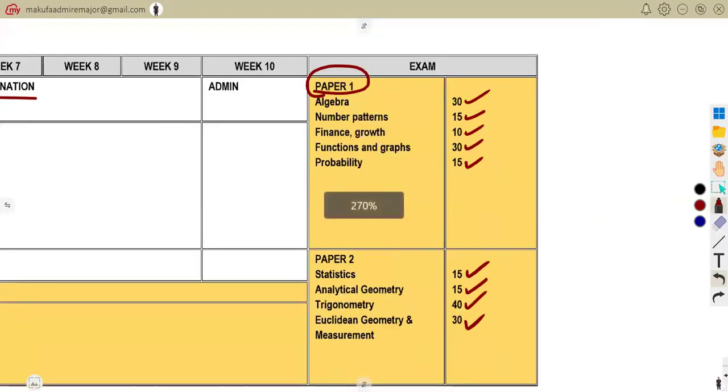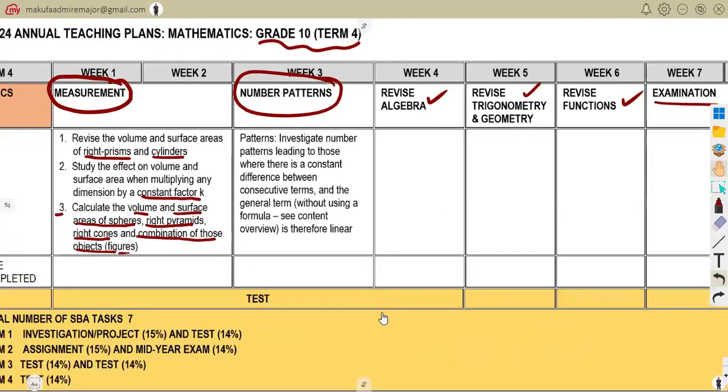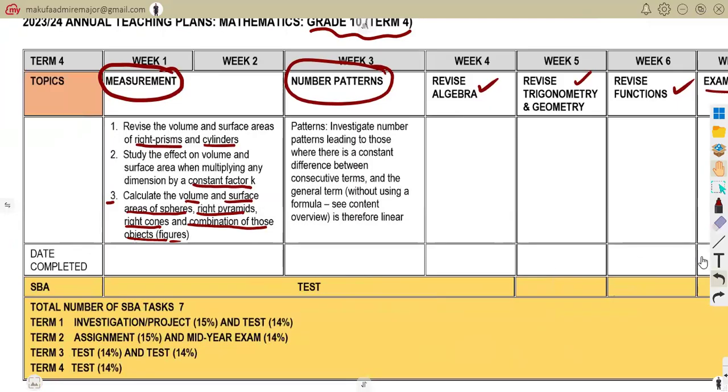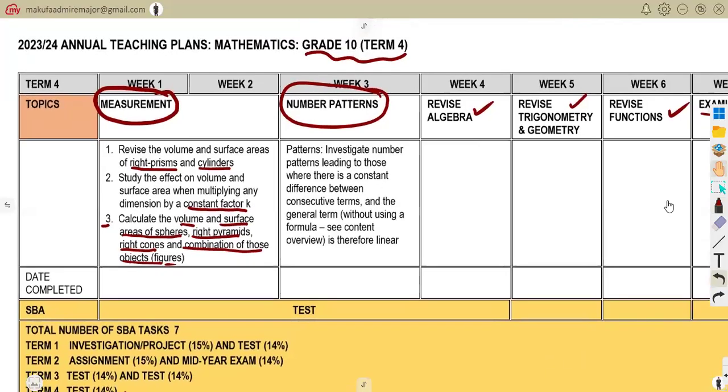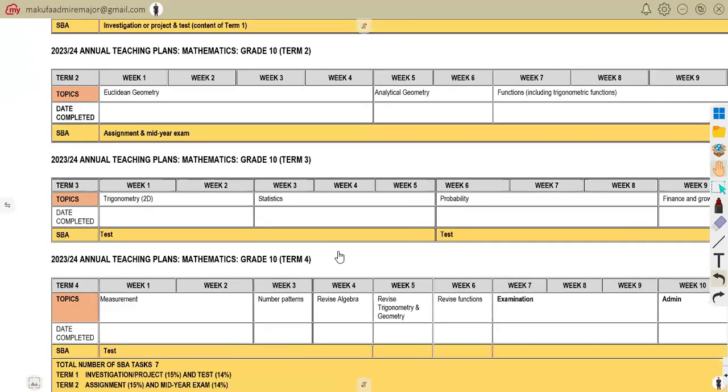As you are working with this term, make sure that you do yourself a favor, because there will be a lot of things that will be needed there. Let's try to work with this one, because as you can see, guys, we need this 14% as the total number of SBA tasks, which they are going to combine everything that you did. So they want you to revise as you are to have your examination.